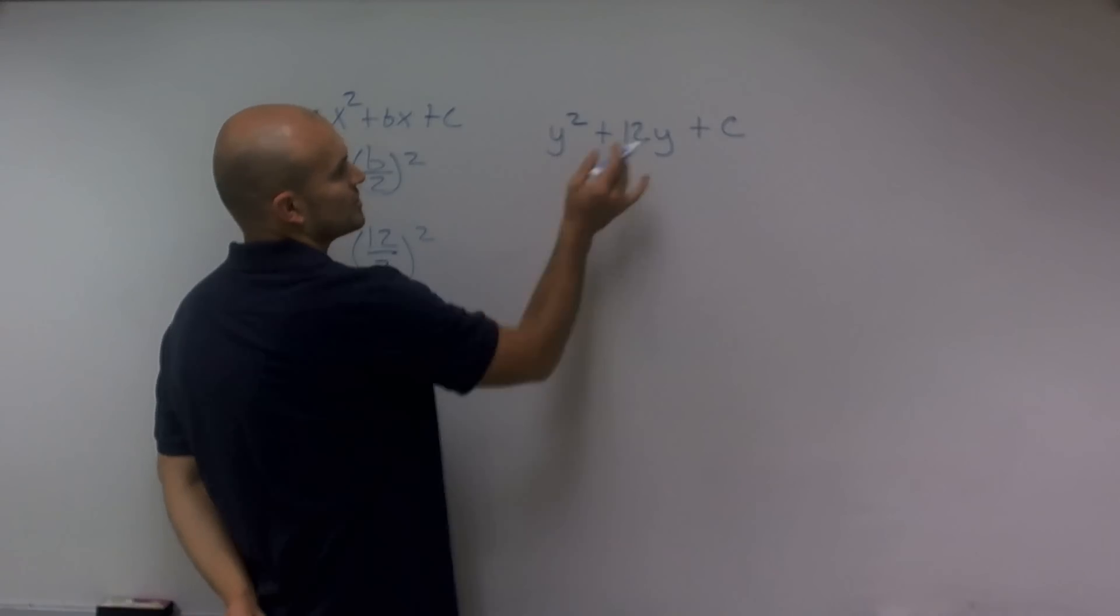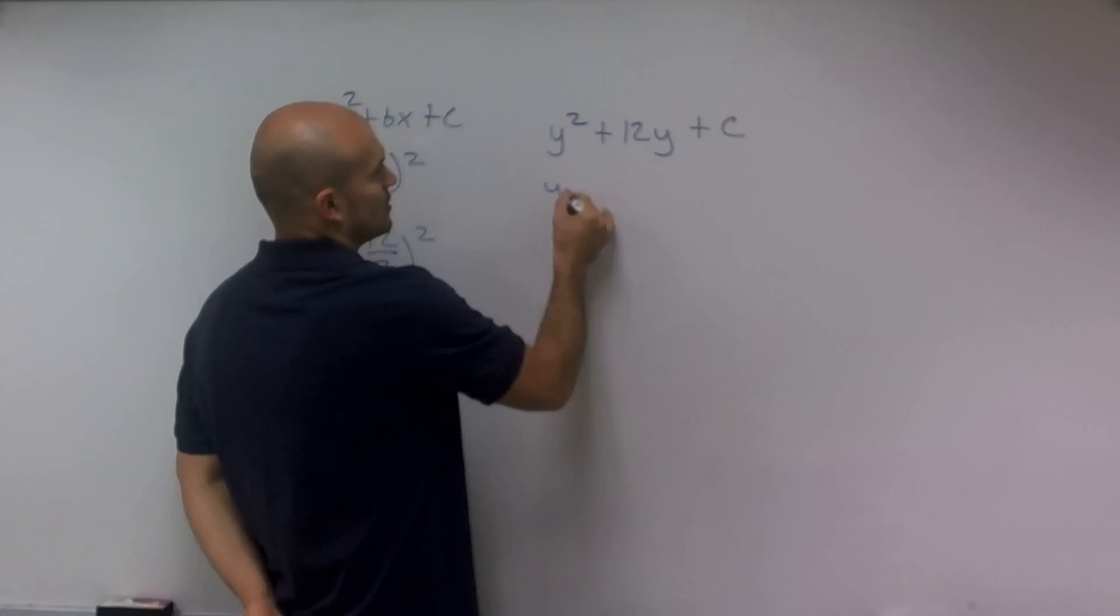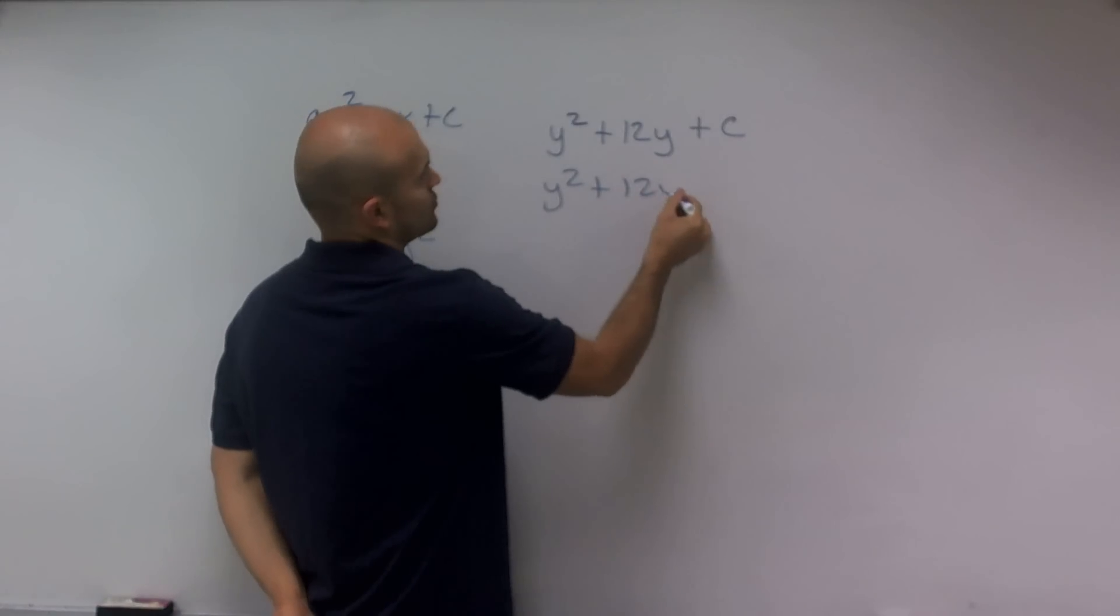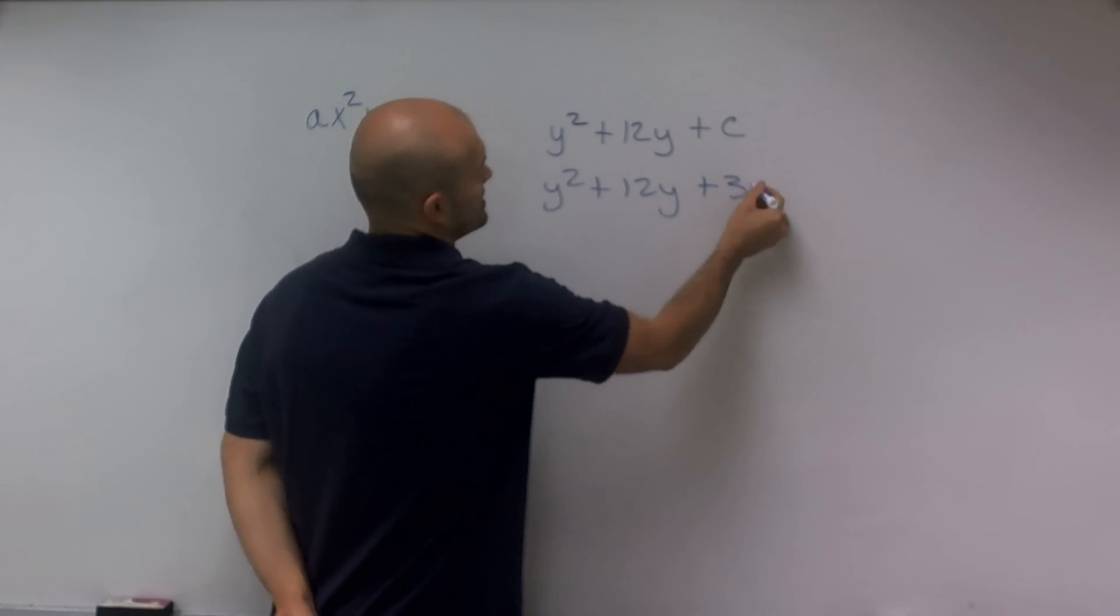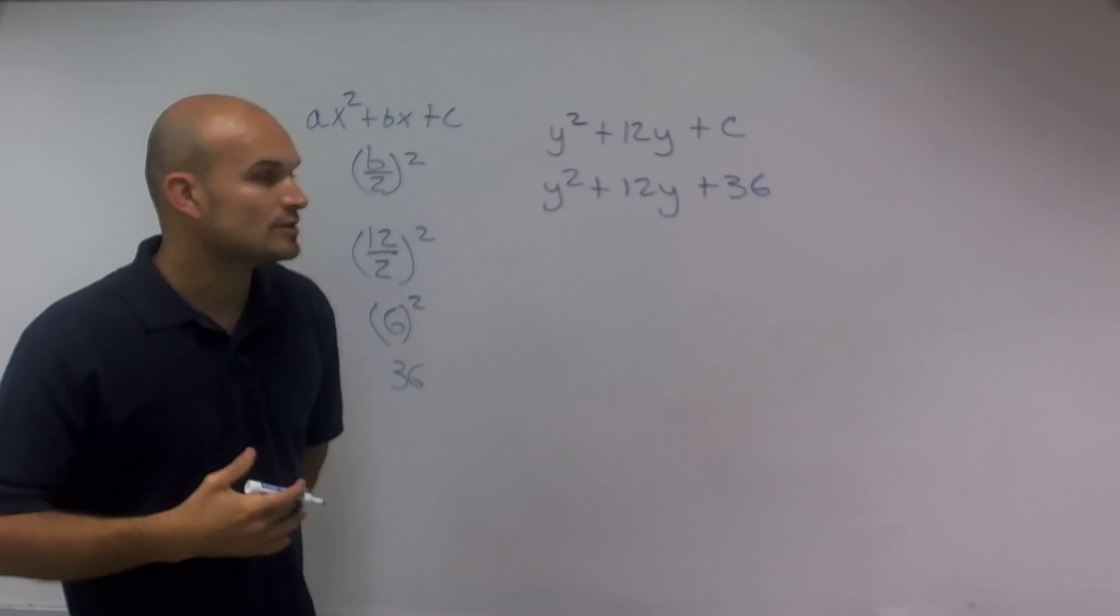So since I get 36, what we're going to do is add that as your c. So y squared plus 12y plus 36. So c is going to equal 36.